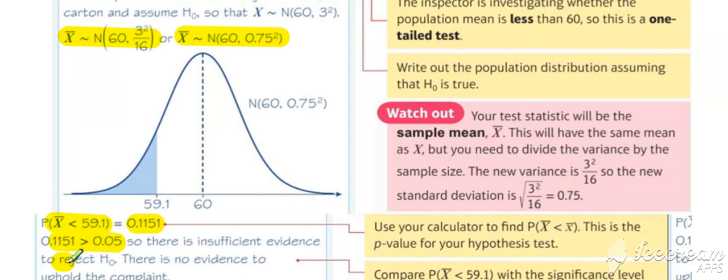Conclude your test. In this case, we do not reject H naught. You could say we accept H naught. Crucially, we need to write our conclusion in the context of the question: insufficient evidence to suggest the complaint is upheld.